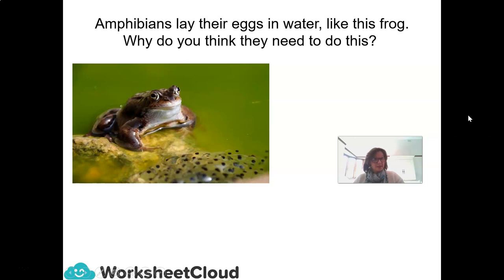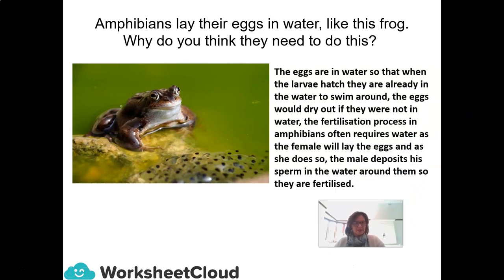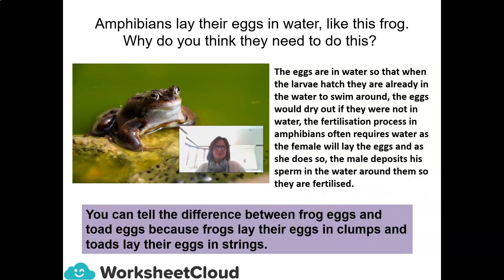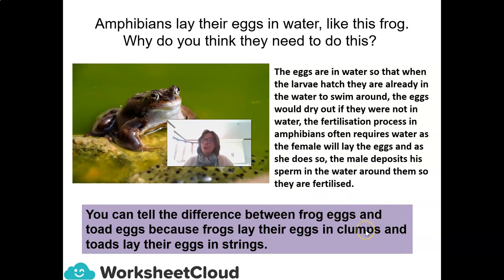Amphibians lay their eggs in water so that when the larvae hatch, they are already in water to swim around — the eggs would dry out if not in water. The fertilization process often requires water: the female lays her eggs and the male deposits his sperm in the water around them to fertilize them. Interesting fact: you can tell the difference between frog eggs and toad eggs because frogs lay their eggs in clumps, and toads lay their eggs in strings.